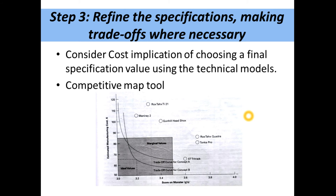Step three is to refine the specifications making trade-offs wherever necessary. Since the target selling price is fixed, we need to make trade-offs among available components. For example, if component A costs 100 rupees and a similar component B costs 80 rupees with slightly different specifications, we analyze whether to go with product A or product B. We must make some compromise — that is what we call a trade-off.